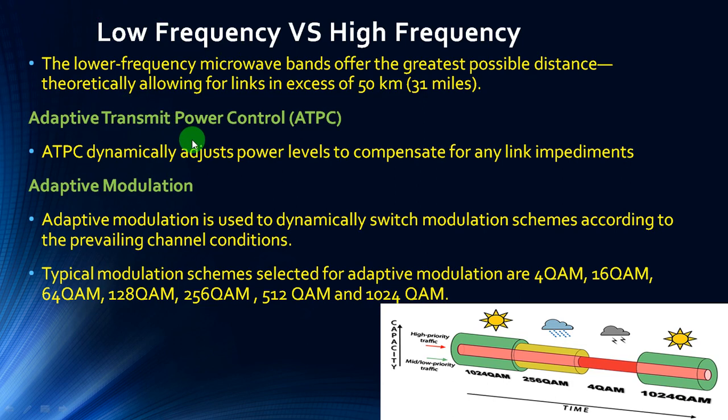Adaptive Transmit Power Control, that is ATPC: ATPC dynamically adjusts the power levels to compensate for any link impediments.